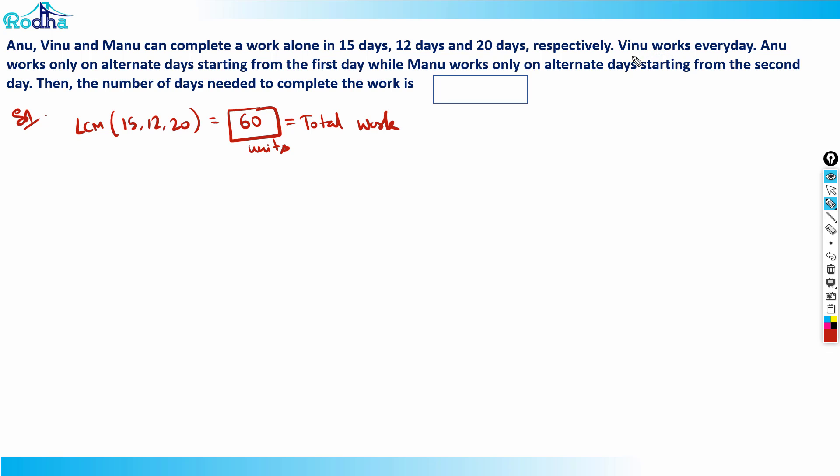Now we know Vinu works every day, so I can calculate efficiency also. What is the efficiency of Anu? Anu can do it in 15 days, so 60 units work Anu can do in 15 days, so efficiency of Anu is 60 by 15, which is 4 units per day.